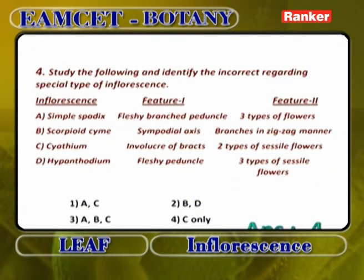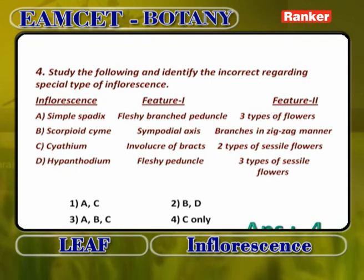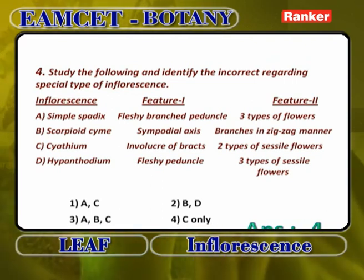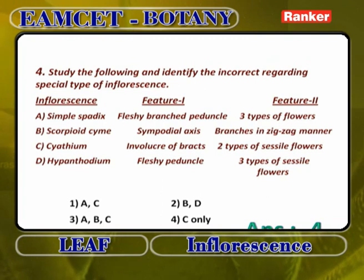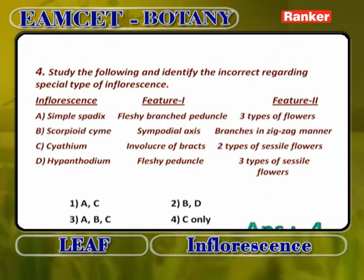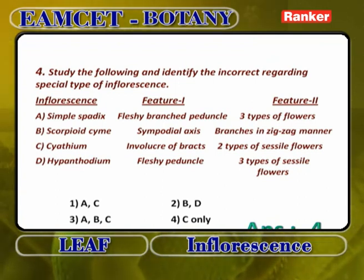Study the following and identify the incorrect statement regarding special types of inflorescence. Only C is incorrect. Simple spadix has a fleshy, unbranched peduncle with three types of flowers — that is correct. Scorpioid cyme has a sympodial axis and branches in a zigzag manner. Cyatheum with involucre of bracts and two types of sessile flowers is wrong — the flowers are pedicellate, where the pedicell shows a jointed nature. Hypanthodium with fleshy peduncle and three types of sessile flowers is correct.